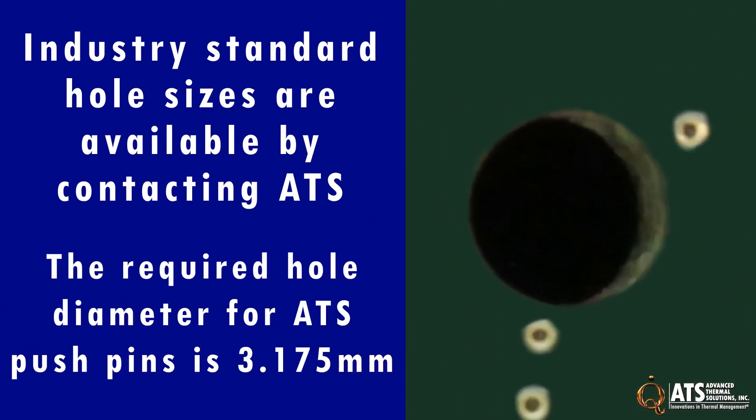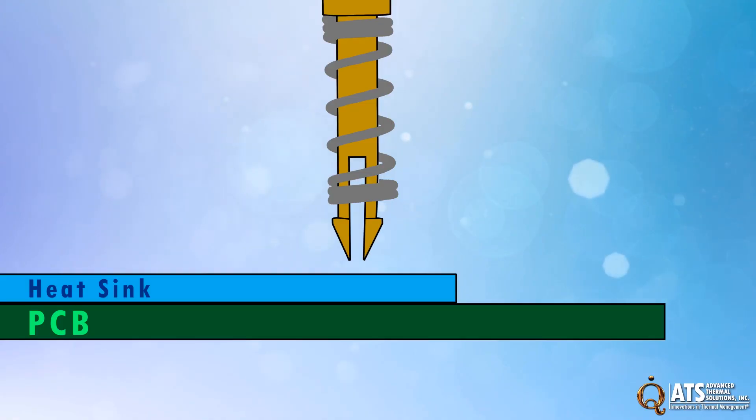The required hole diameter for all ATS pushpins is 3.175 millimeters. Each pushpin has a flexible barb at its installation end that engages with the bottom of the hole in the PCB.